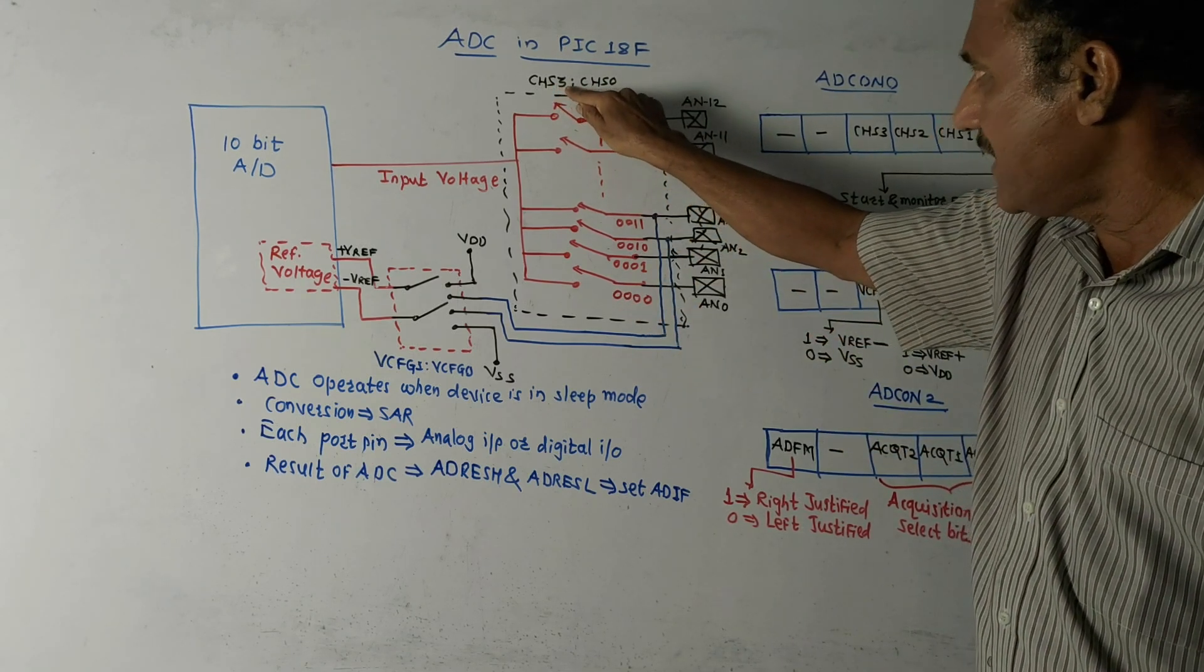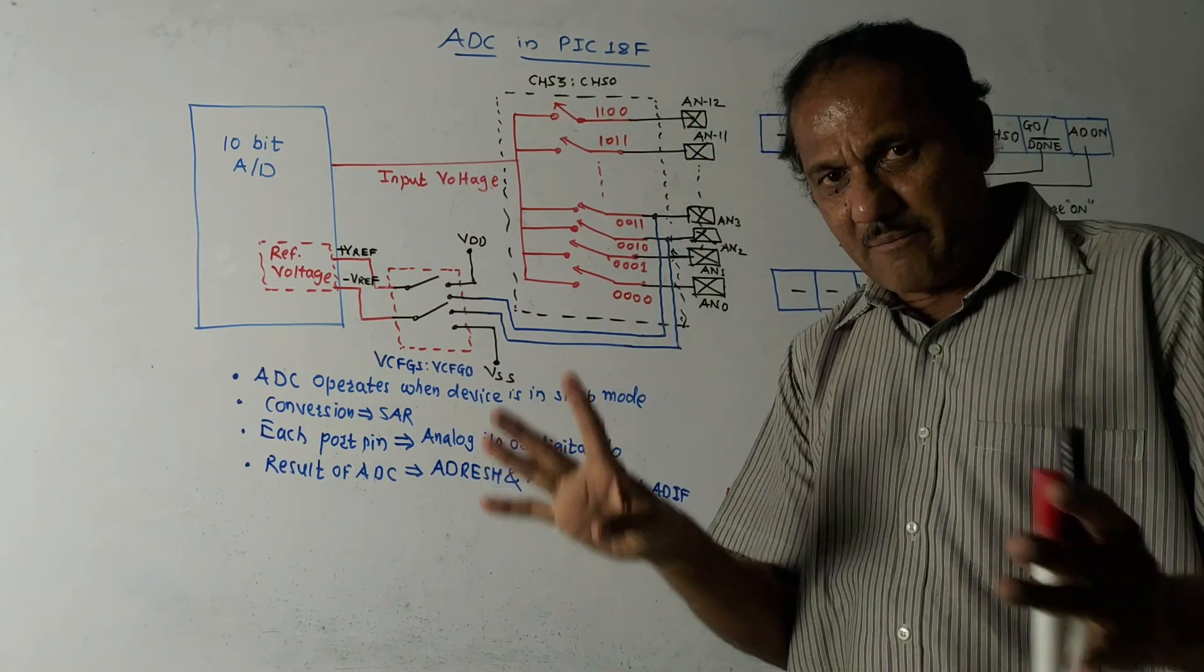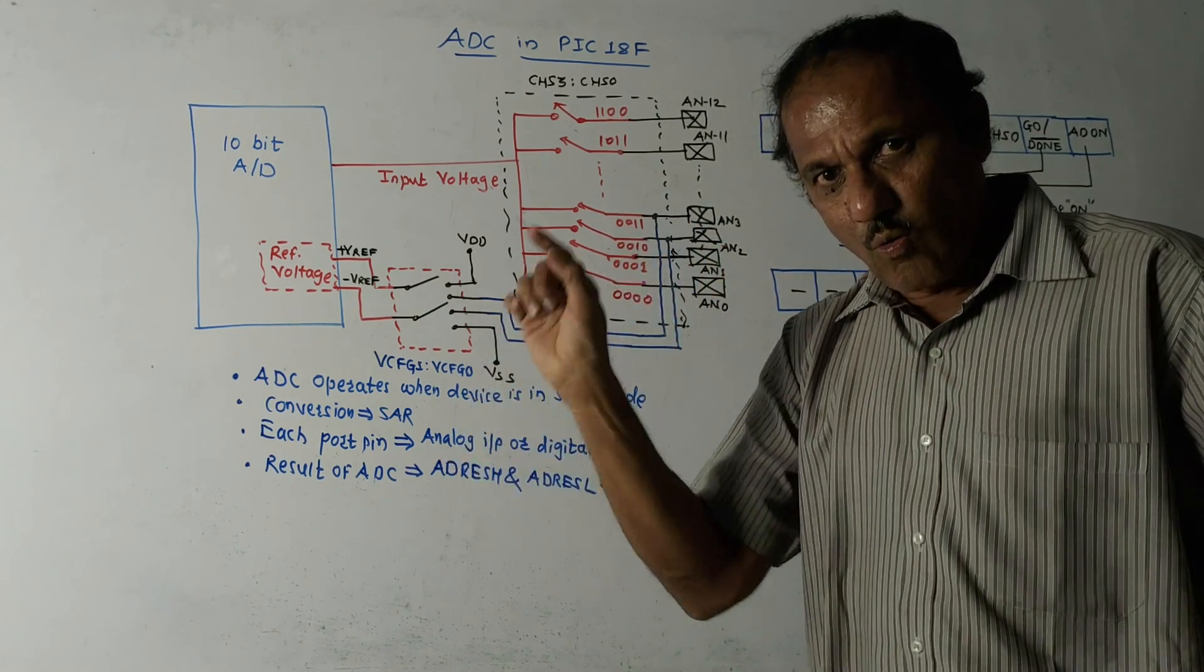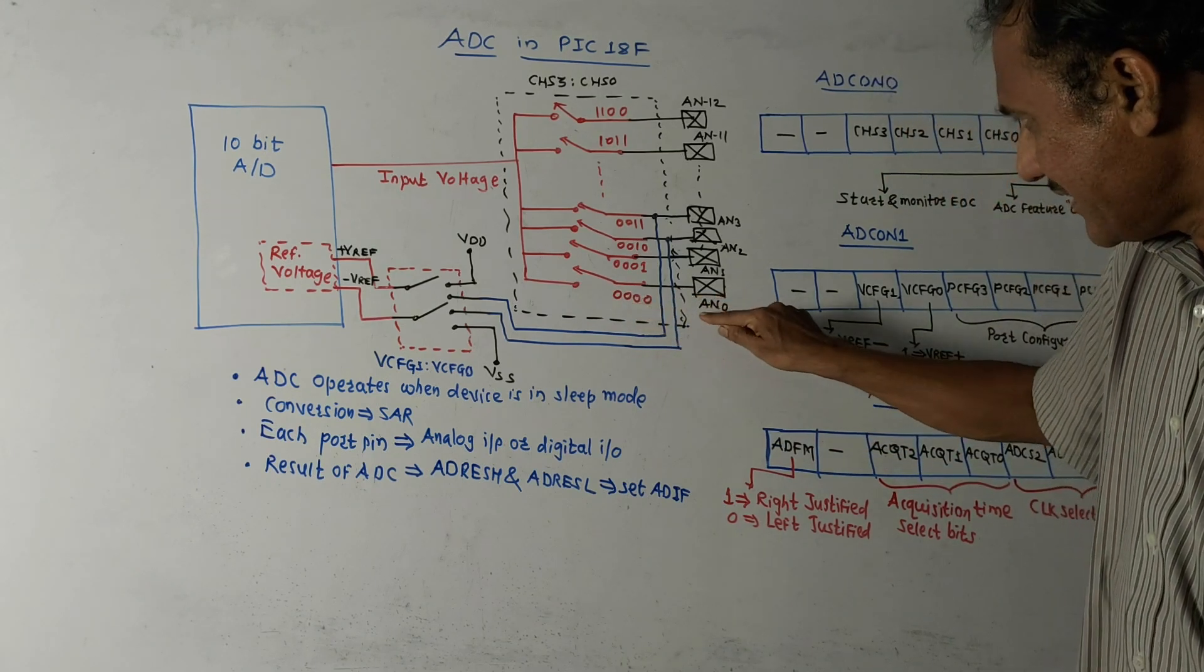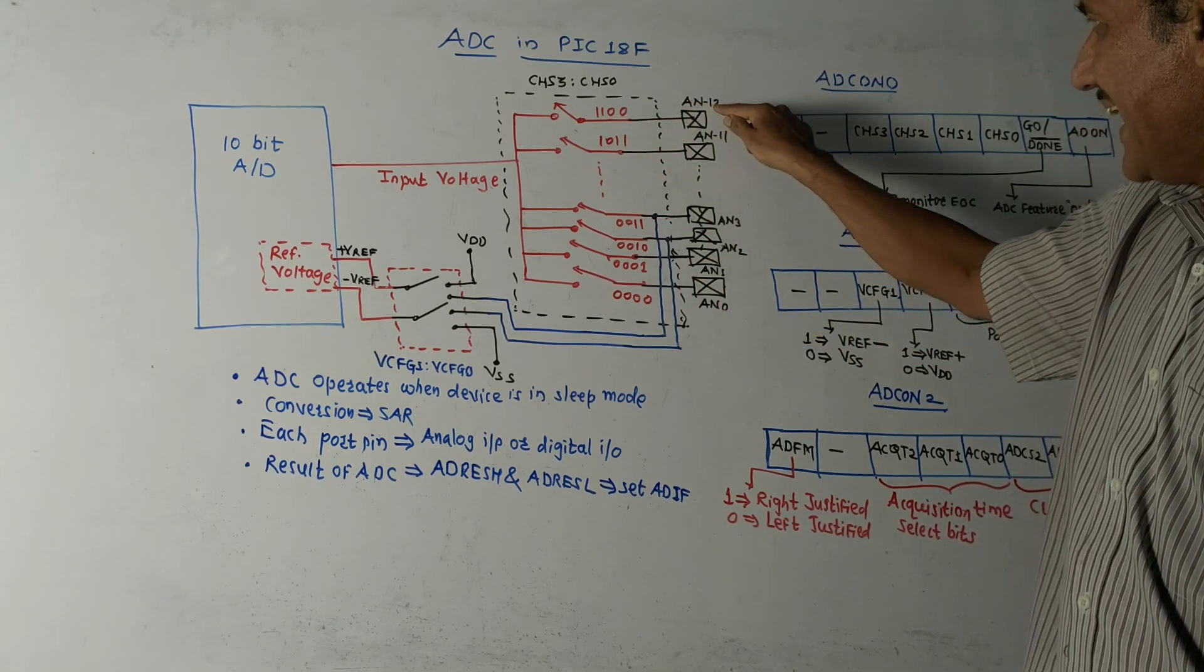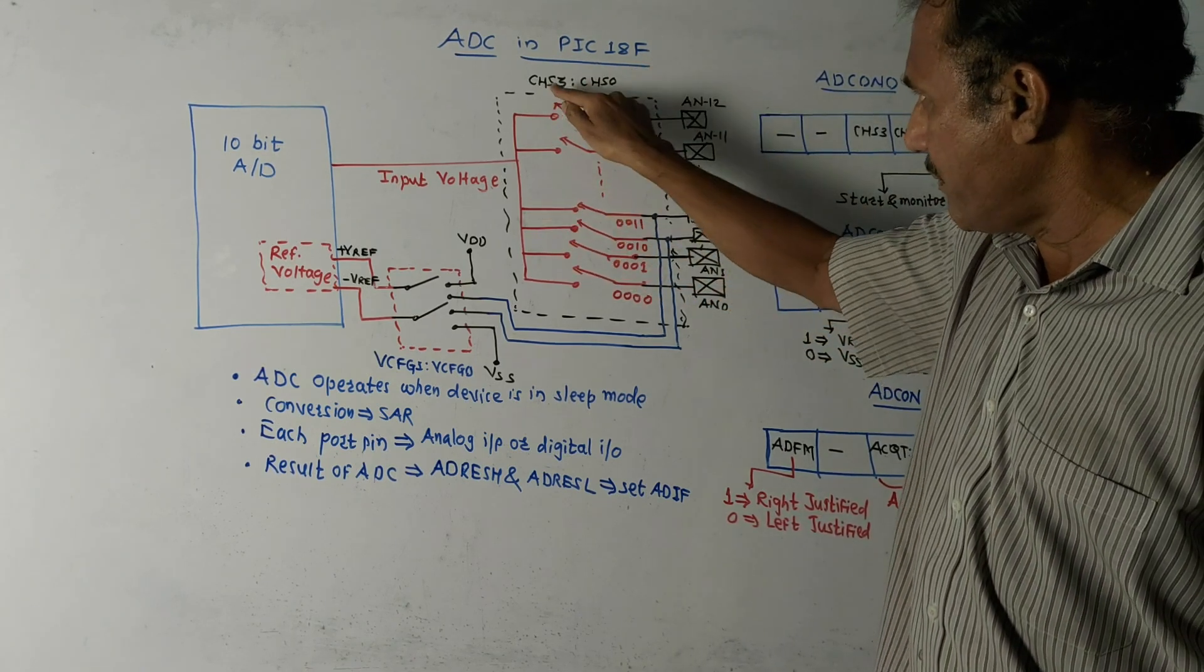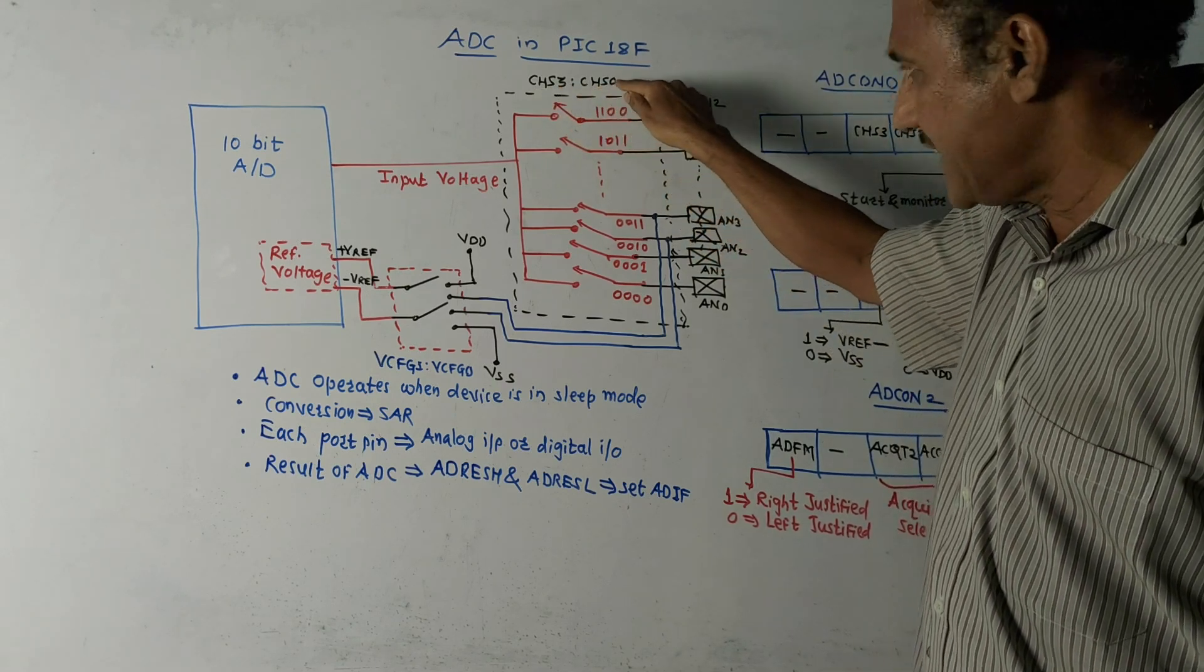CHS3, CHS2, CHS1, and CHS0, so 4 bits are there. Total combinations will be 0000 to 1111. If combination is 0000, then corresponding pin will be AN0. Likewise, for 1100 it will be AN12. So this configuration, this switching action, depends on the bits contained in CHS3 and CHS0.